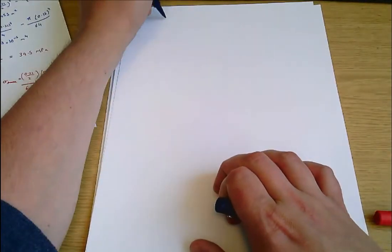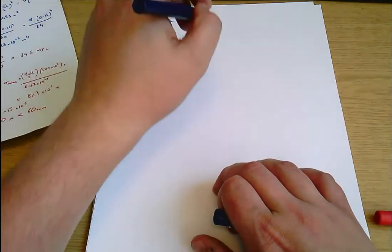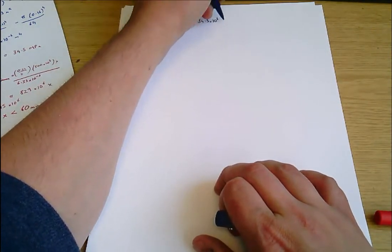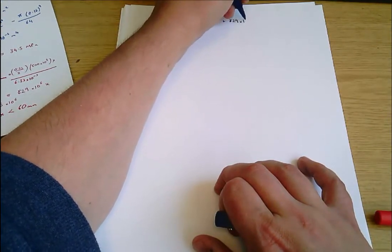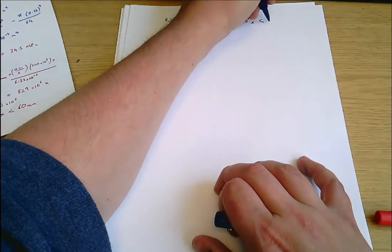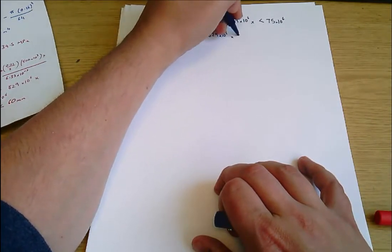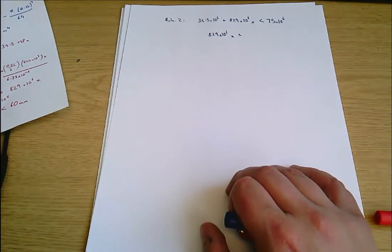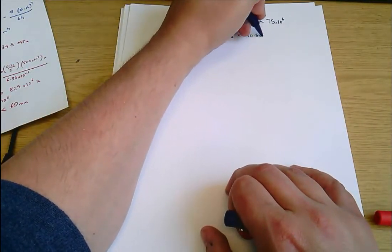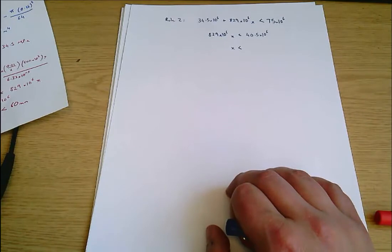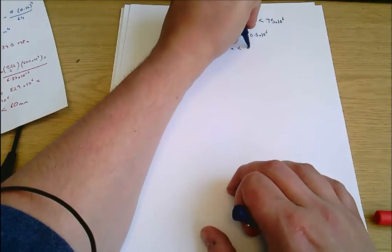There's then going to be a second rule which says it's about the maximum compressive stress, which is where the axial load and the bending stress add up. So 34.5 times 10 to the 6 plus 8.39 times 10 to the 6 x must be less than 75 times 10 to the 6. And therefore, 8.39 times 10 to the 6 x must be less than 40.5 times 10 to the 6 and x must be less than 48.9 millimeters approximately.